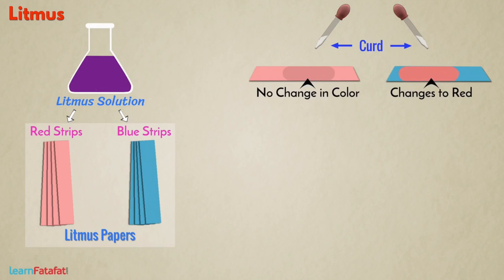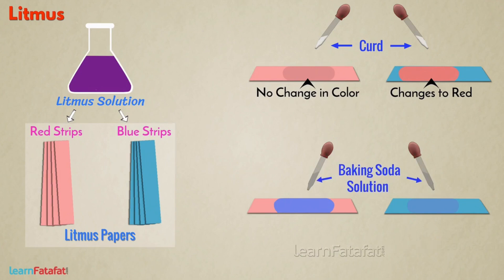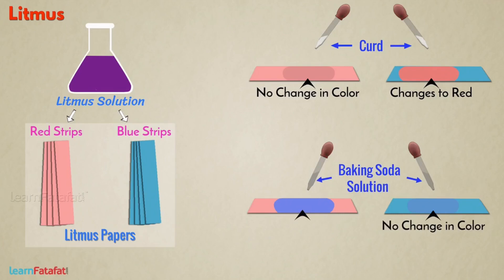Similarly, if you make a solution of baking soda with water and put one drop of the solution on each litmus paper, then you will notice that the blue litmus paper does not change color. However, the red litmus paper changes to blue.